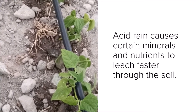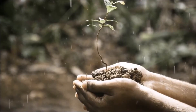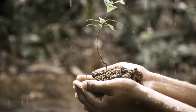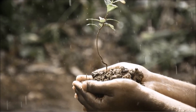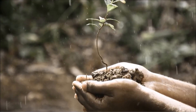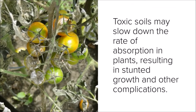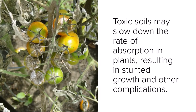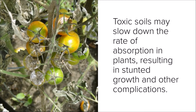Without key nutrients like calcium and magnesium, plants are more likely to die. Acid rain also causes aluminum to leach through the soil, causing aluminum toxicity. Toxic soils may slow down the rate of absorption in plants, resulting in stunted growth and other complications. Seeds can fail to germinate in soils contaminated by acid rain.